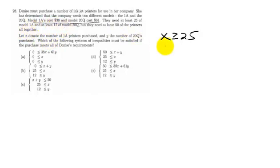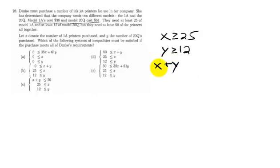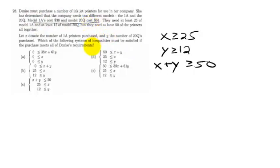And at least 12 Model Q's, so Y is greater than or equal to 12. And they need at least 50 altogether, so if I add up the two different ones, X plus Y must be at least 50. Those are the requirements for purchase. Again, the cost had nothing to do with the requirements.